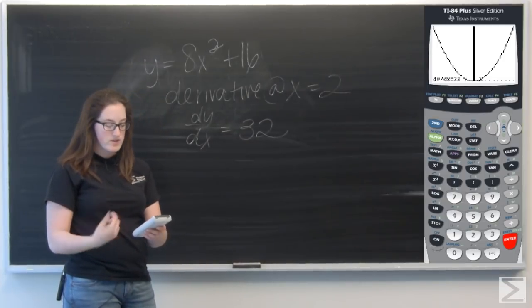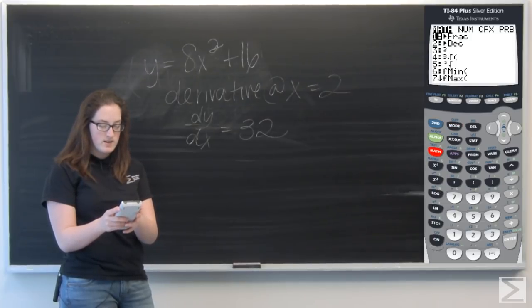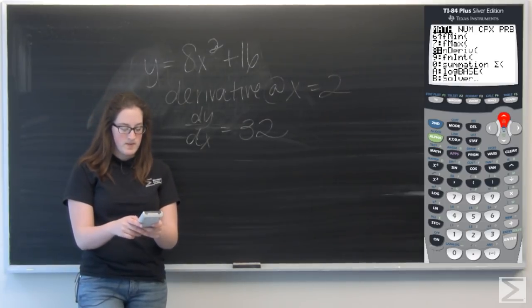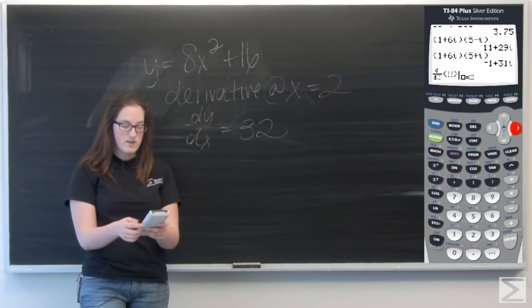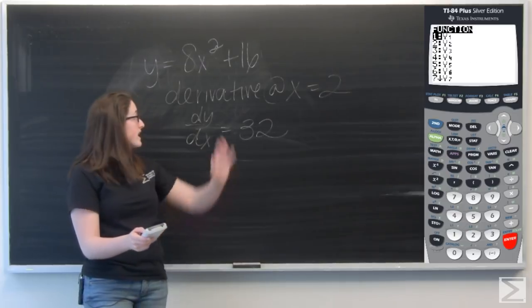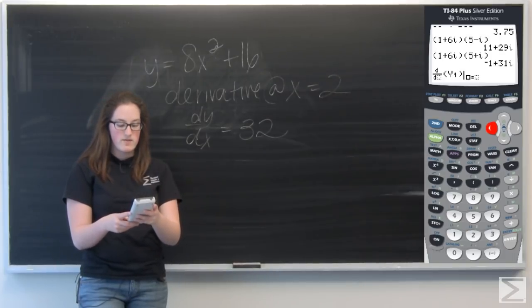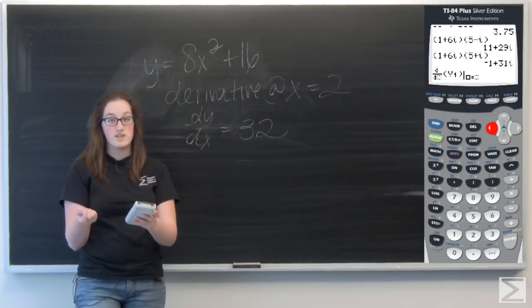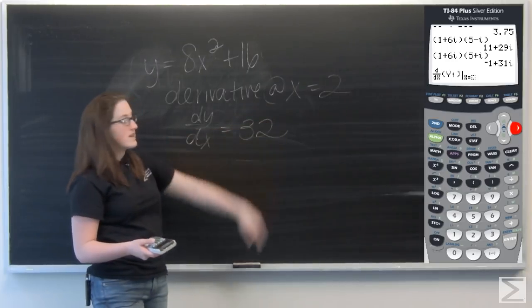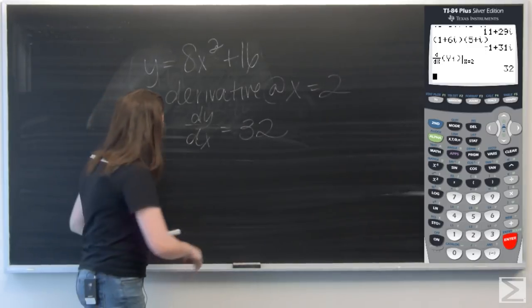And then there's another way to do that without graphing the function. So if I go to my home screen. If I hit math. Scroll down to number eight. I'm actually going to use the vars tool to do that. So hit vars. Go over to y vars. That's your y equals. Select function. And I wrote this in y1. So I'm going to pick y1. Now the next thing you need for n derivative is the variable you're taking the derivative with respect to. So I'm going to select x. And then you need to select a point. So I want the derivative x equals two. I'm going to put two. Hit enter. And again I get 32. So that's great.